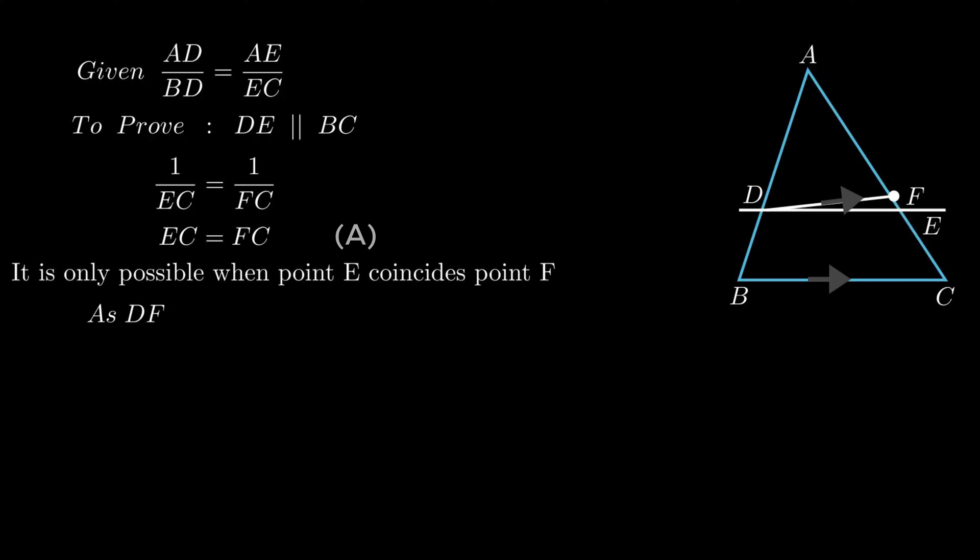As from construction segment DF is parallel to segment BC therefore by using the graphical interpretation of equation A we conclude segment DE is parallel to segment BC hence the theorem is proved. So this was it for the video, see you in the next one, thank you for watching.